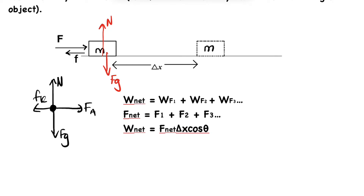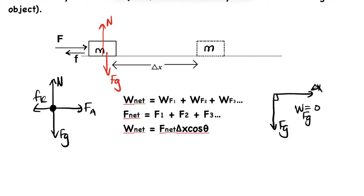As discussed in the previous video, forces that act perpendicular to the displacement do zero work. The gravitational force acts perpendicular to the displacement, so the work done by gravity is zero. Similarly, the normal force acts perpendicular to the displacement, so the work done by the normal force is zero — because when you substitute, it's cos 90, which equals zero.